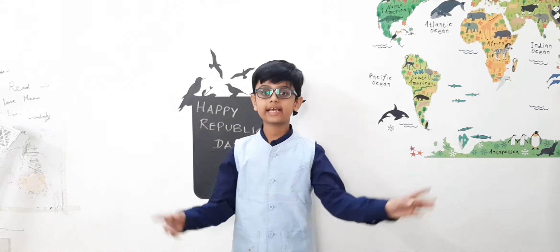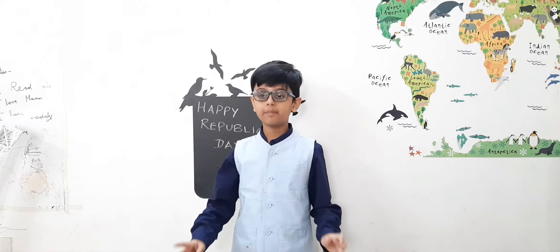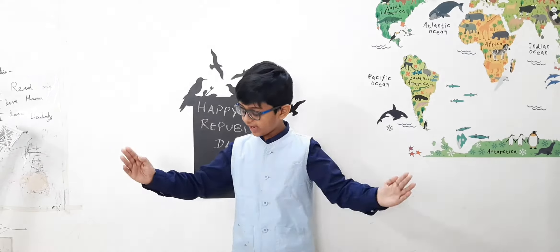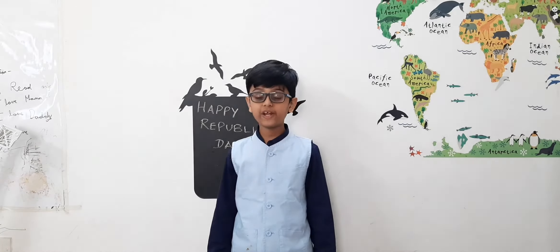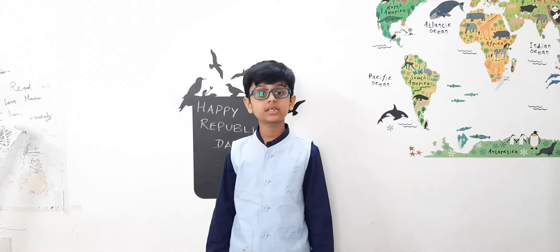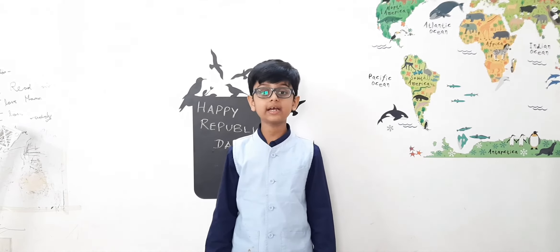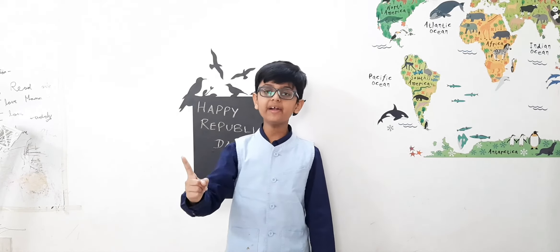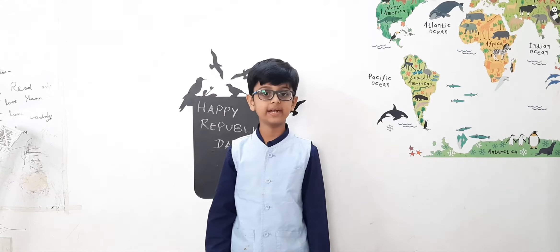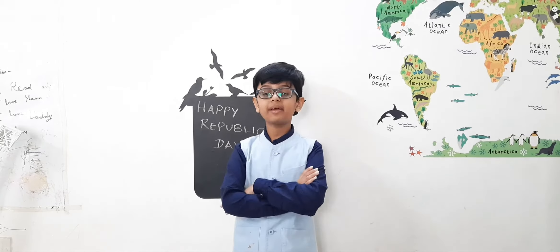One reason why the British won was that the Indian kings were never united. And so the British formulated a strategy known as divide and conquer. After years of struggle for freedom, our freedom fighters like Jawaharlal Nehru, Mahatma Gandhi and Bhagat Singh had a vision of one India and one fight for independence. And so on 15th August 1947, India became independent.